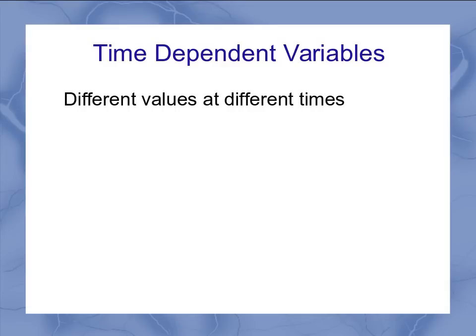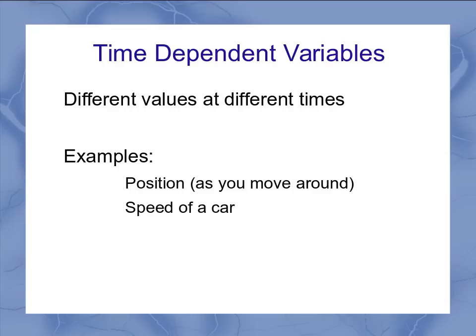Again, let's look at some examples. So your position as you move around. At different times of the day, you're in different places. So your position is not a constant. It's going to change depending on what time you look at it. Same for the speed of your car. As you start out in the morning going from home to school, your speed's going to change.